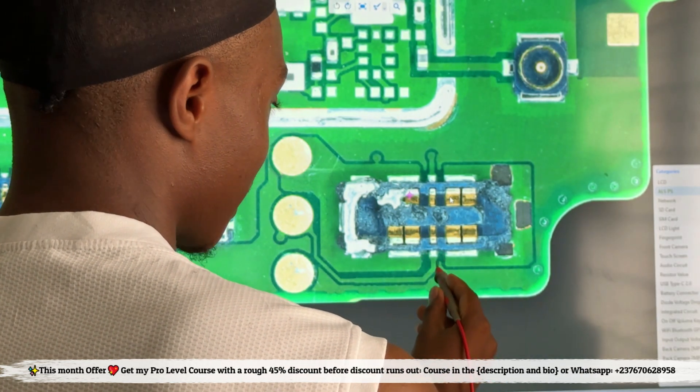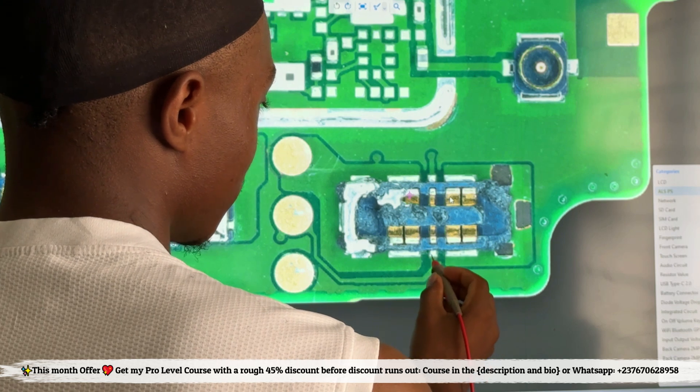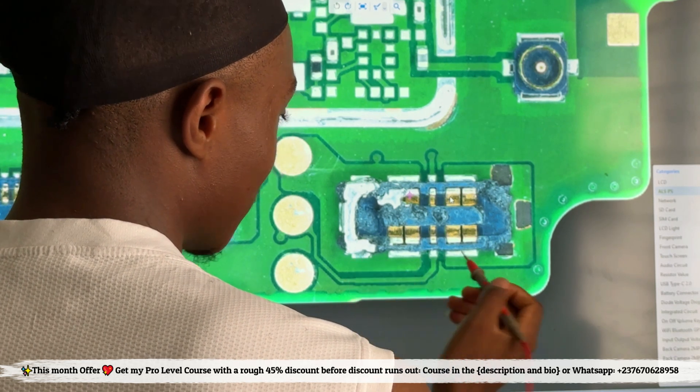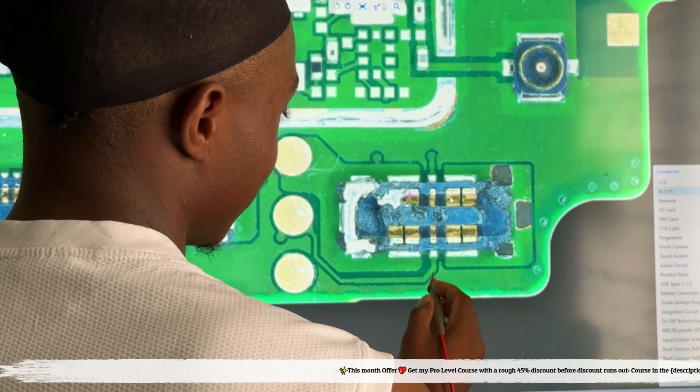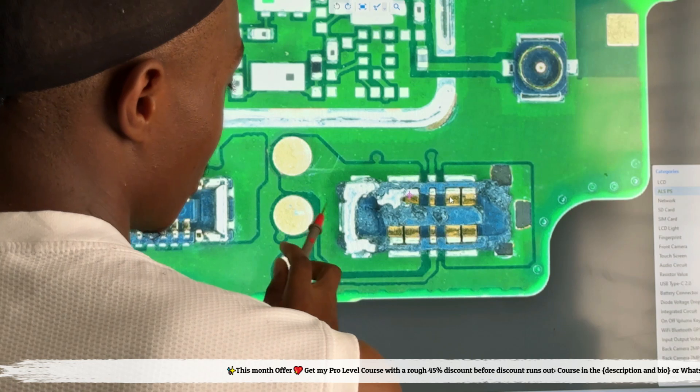You can see this track is clearly connected here, which means that even if it peels off right here, you can still see and follow the track. You can just scrape this place using your blade, solder a cable, then jumper it here and everything will be good.